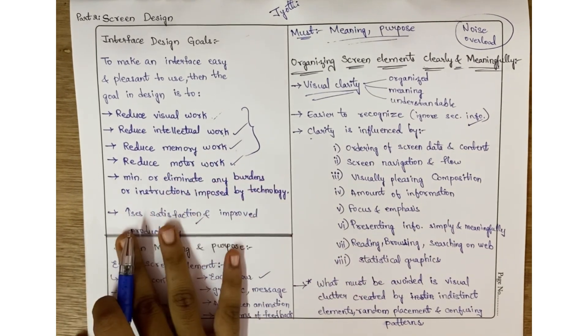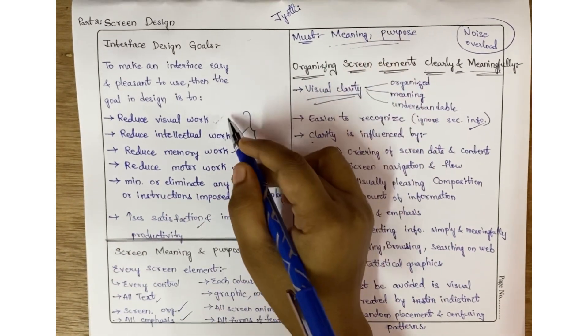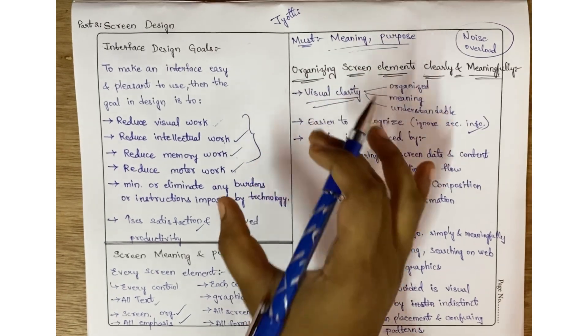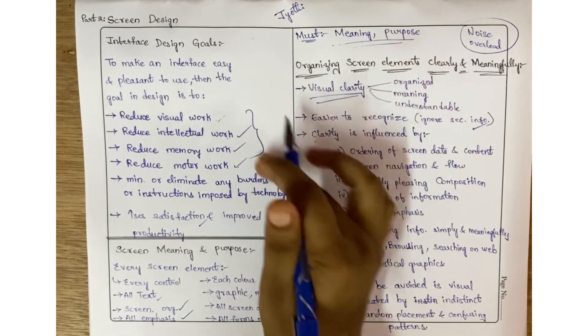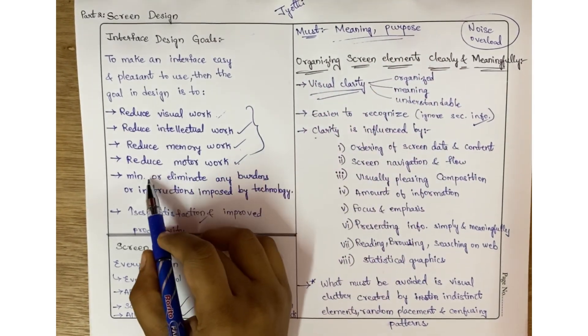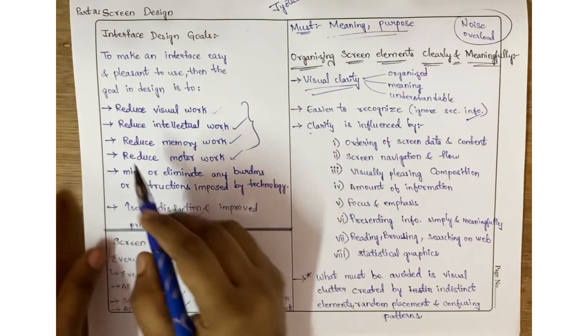The goals of that design process are: reduce visual work, reduce intellectual work, reduce memory work, and reduce motor work. These four are important in the designing process.